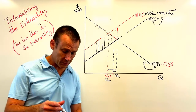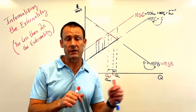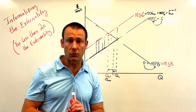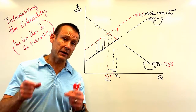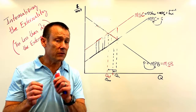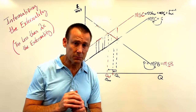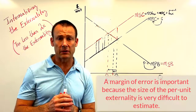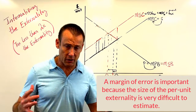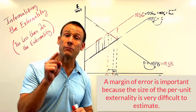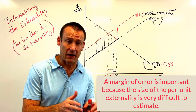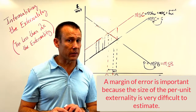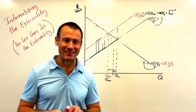We want to get our market participants to internalize the cost of the externality — to feel the full cost — so the market gives us the right allocation of resources to production of the good. We do that with per unit taxes, and we'll do good even if we miss the optimal per unit tax. We can overtax or undertax as long as it's less than 2x the per unit externality, which gives us a nice margin of error. Half the size? Great — you're getting rid of more than half the deadweight loss. 1.5 times the size? No problem. But don't tax more than 2x the size of the per unit externality.